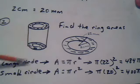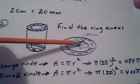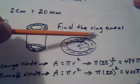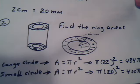So for the larger circle, the radius is 22 millimeters. So replace the r with 22 millimeters. For the smaller circle, the radius is 20 millimeters, so replace the r with 20 millimeters.